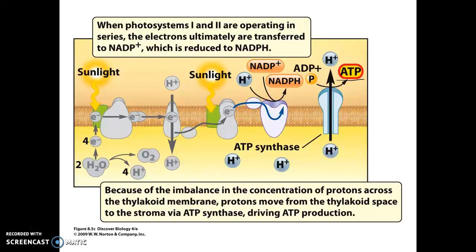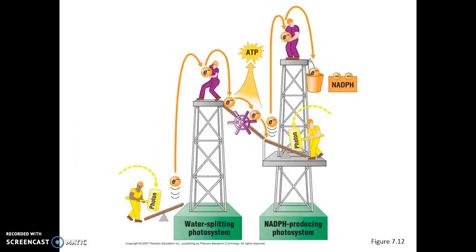Both NADPH and ATP are the two forms of chemical energy made during the light reactions. To summarize: Photosystem II, the water-splitting photosystem, energizes electrons by absorbing light. Those electrons are taken away, passed to Photosystem I, and that energy ultimately results in the production of ATP. In Photosystem I, another photon of light is absorbed, the electrons are energized, and those electrons are then loaded onto the electron shuttle buses as NADPH. These two forms of chemical energy will then be used during the Calvin Cycle.